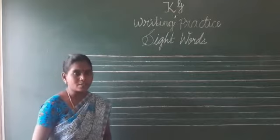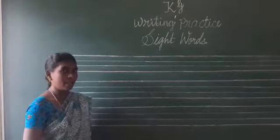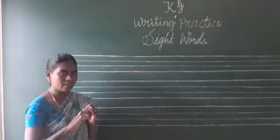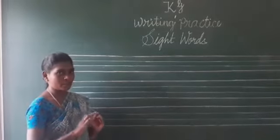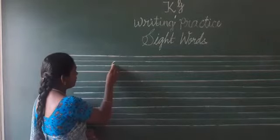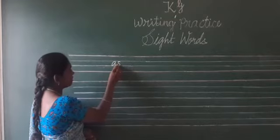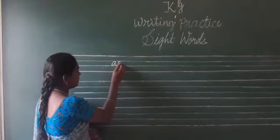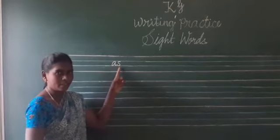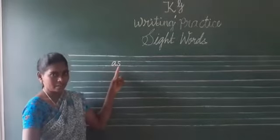So the first word which we are going to write today is: AS. What's the word? AS. The spelling for AS is A, S. This is a two-letter word. The spelling for AS: A, S. AS.